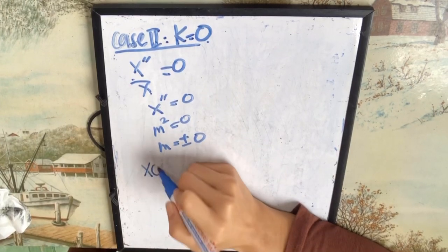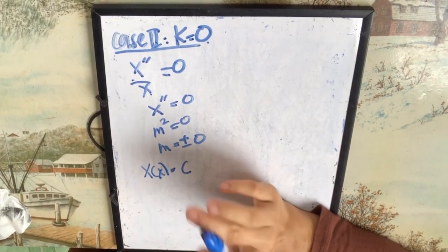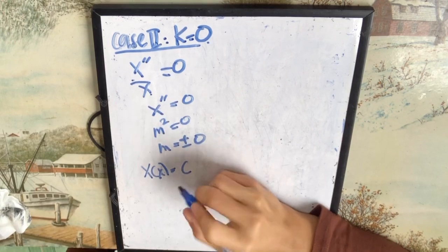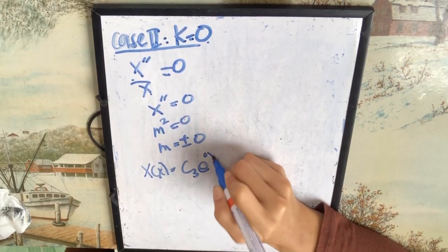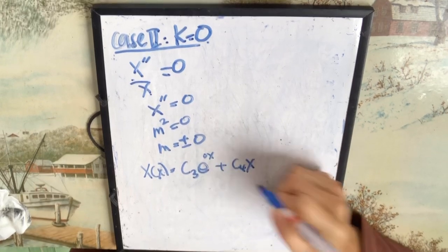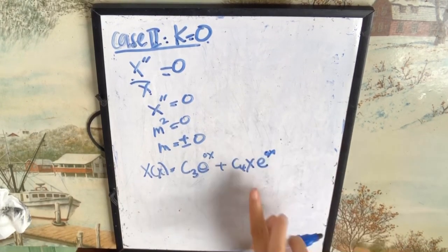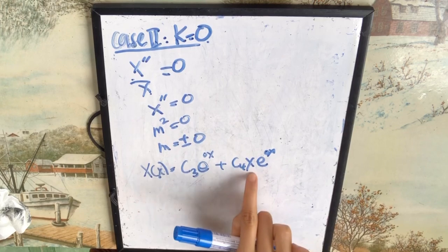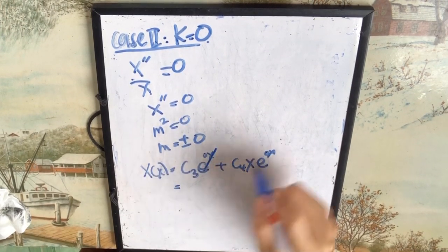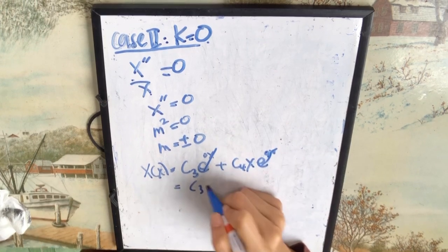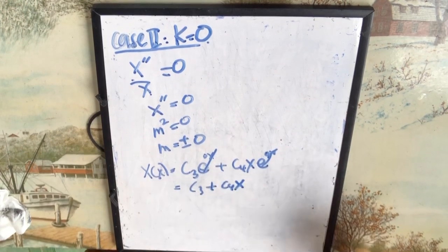So the equation for x here is c3 e power of 0x plus c4x e power of 0x. Because it's real and repeated, they have extra x here. So simplify. This one is 0, this one is 0. So you have c3 plus c4x.